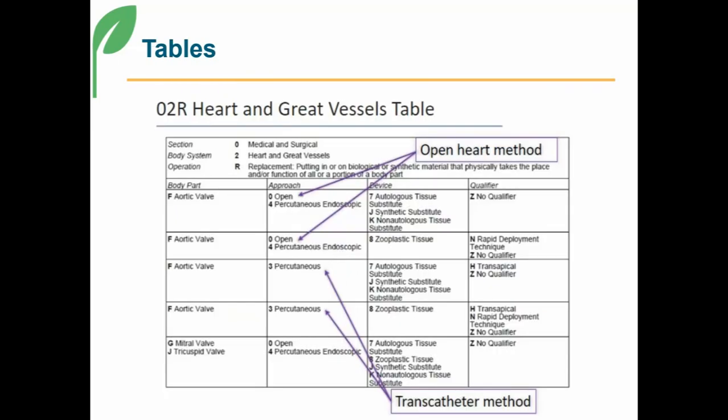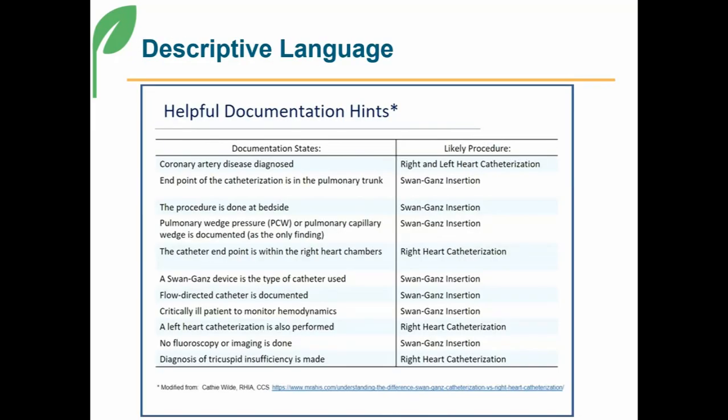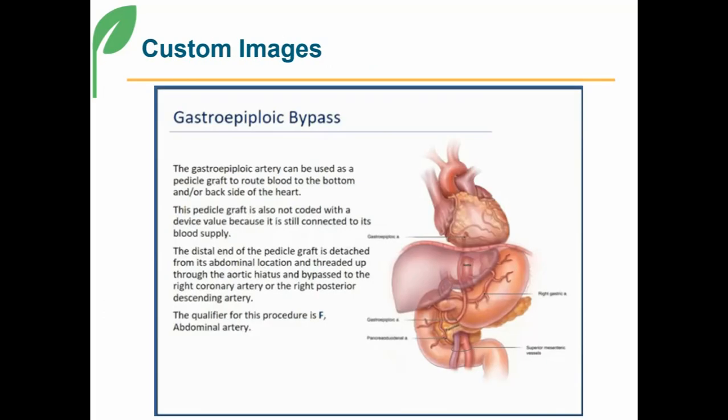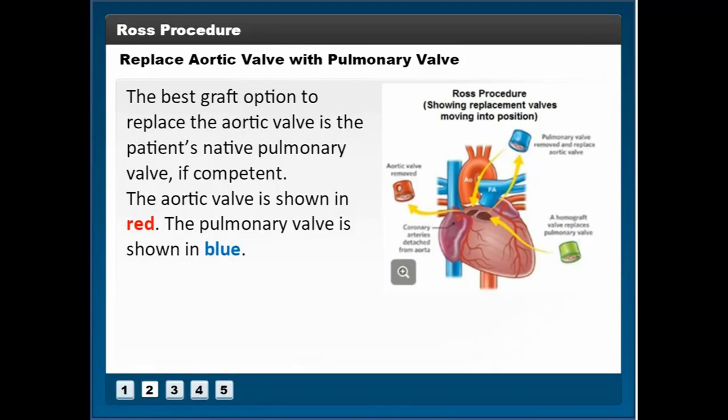Tables, a unique feature of PCS, are shown to explain code selection. Downloadable references help with interpretation of the documentation during coding. Custom images show exactly what the coder needs to know and increase the understanding of the procedure. Images that portray the sequence of events are used frequently.